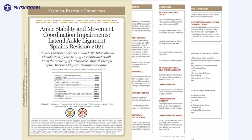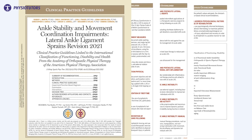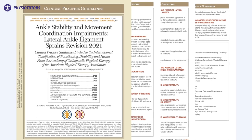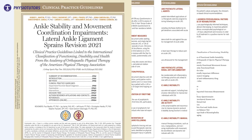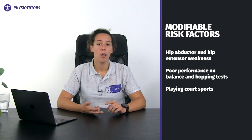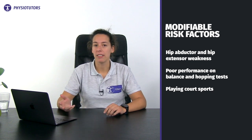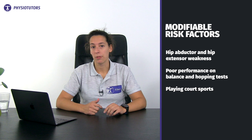The clinical practice guideline describes several risk factors as well as diagnostic findings that should be assessed in your patient. Modifiable risk factors are hip abductor and hip extensor weakness, poor performance on balance and hopping tests, and playing court sports. After an acute lateral ankle sprain, return to participation can be expected from as soon as one day following the sprain to a little more than three weeks, depending on the desired activity or sport.